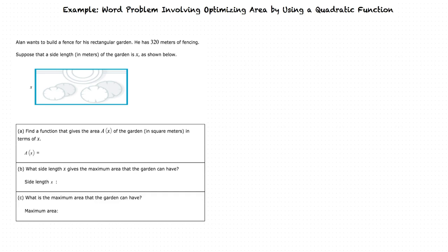This is an example video for the topic Word Problem Involving Optimizing Area by Using a Quadratic Function. Let's look at an example problem. Alan wants to build a fence for his rectangular garden. He has 320 meters of fencing. Suppose that a side length in meters of the garden is x, as shown below.